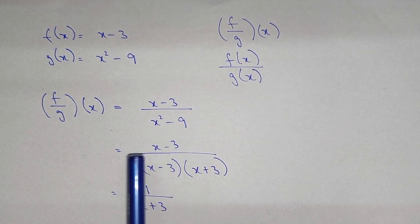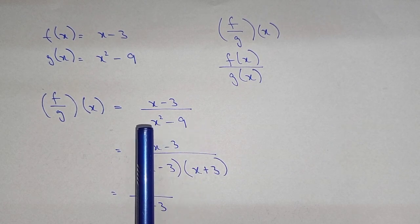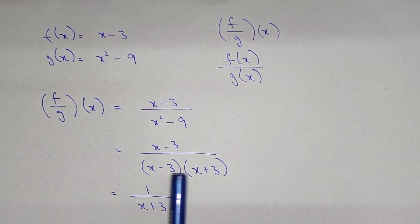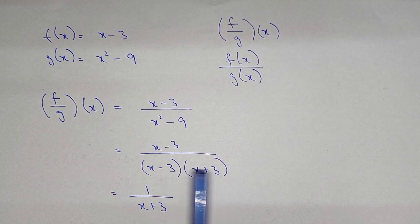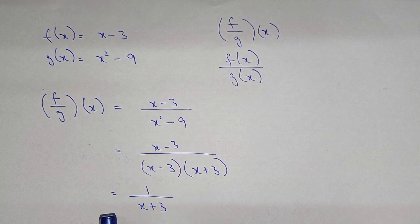So x minus 3 divided by, we know that the factors of this one are a square minus b square equal to a minus b times a plus b. So x minus 3 multiplied by x plus 3. So x minus 3, x minus 3, that will be cancelled. The final answer will be 1 over x plus 3.